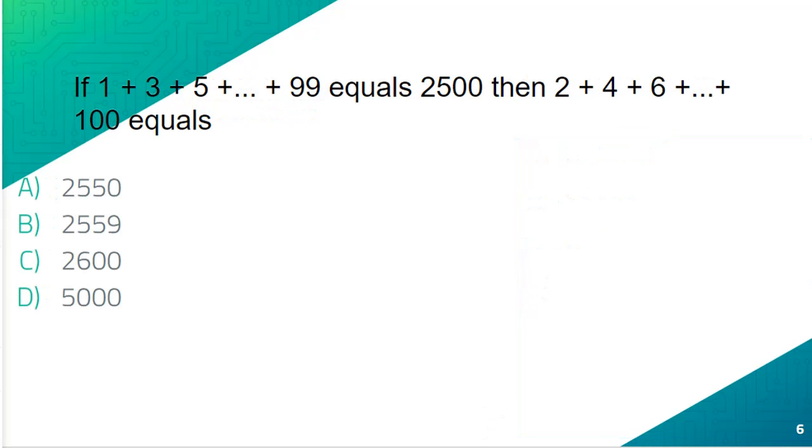Our next question is: if 1+3+5+...+99 equals 2500, then 2+4+6+...+100 equals? These dots are all the numbers in between. So the first equation is all odd numbers from 1 to 100.